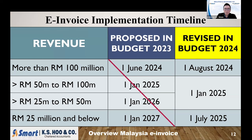After the new Budget 2024, the government amended the implementation dates. Phase one: businesses with sales of RM100 million and above — implementation date is 1st August 2024. Phase two: businesses with turnover below RM100 million but above RM25 million — implementation date is 1st January 2025. Phase three: businesses with sales less than RM25 million — implementation date is 1st July 2025.